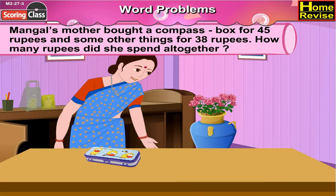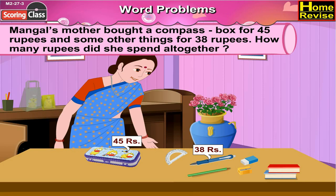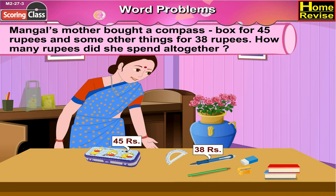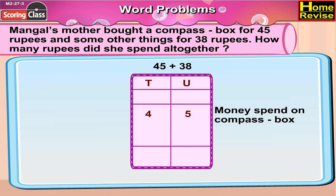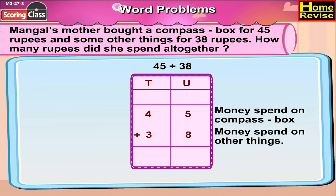Mangal's mother bought a compass box for 45 rupees and some other things for 38 rupees. How many rupees did she spend altogether? The money spent altogether is the money spent on the compass box plus money spent on other things — that is 45 plus 38.